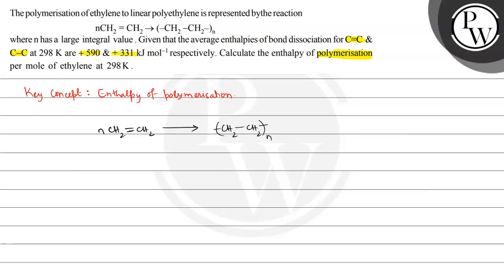So we can write that the heat of reaction equals the bond dissociation enthalpy for C=C minus those single bonds that form. That is: 1 × ΔH(C=C) minus 2 × ΔH(C-C), which equals 1 × 590 minus 2 × 331, which equals 590 minus 661, which equals minus 71 kJ per mole.